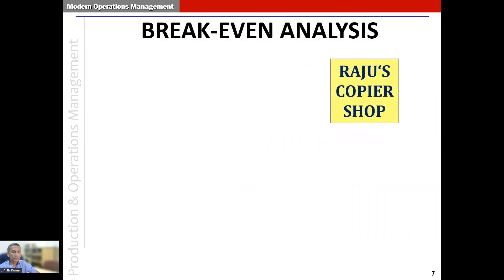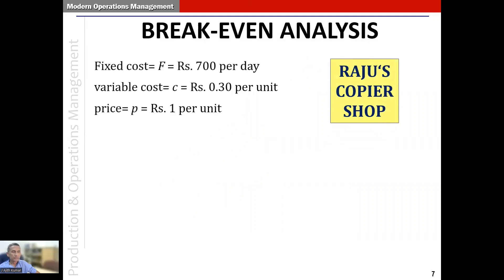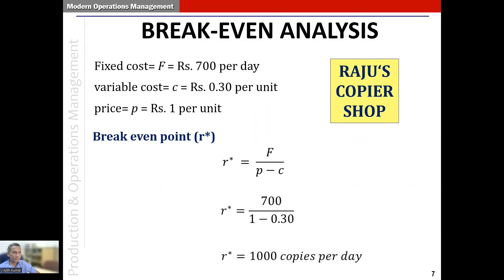Now let's apply our learning to Raju's photocopier shop. The fixed cost is 700 rupees per day, the variable cost small c is 0.30 per unit, and the price is one rupee per unit. The break-even point therefore is capital F divided by (p minus c), which works out to 1000 copies per day. This means that if Raju produces more than 1000 copies per day he will make a positive net profit; if he makes less, he will have a loss; and if he makes exactly 1000 copies per day, he neither makes a profit nor a loss.